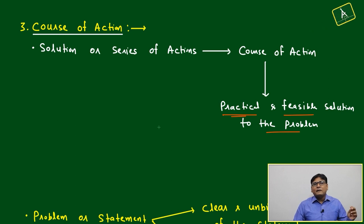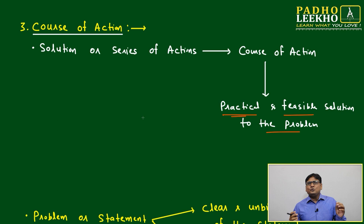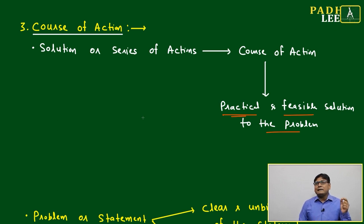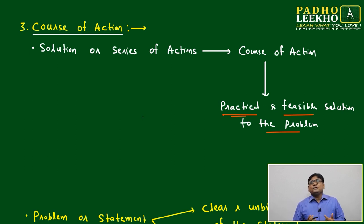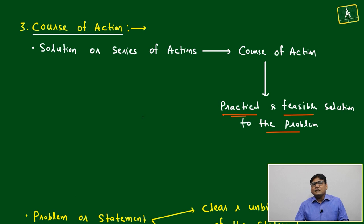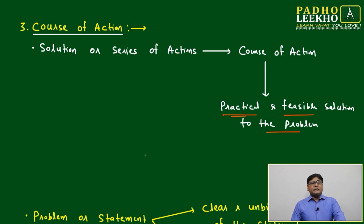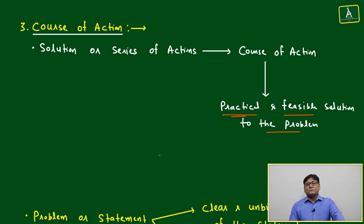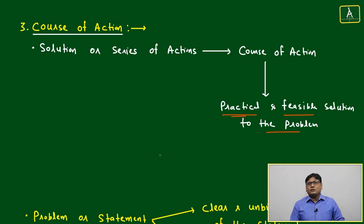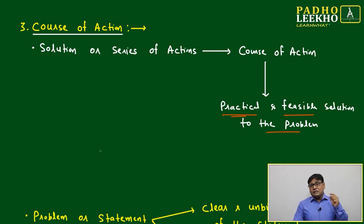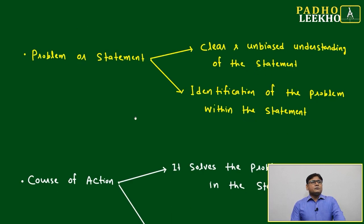Many times, whatever course of action is given may be very practical and very feasible, but it is not tackling the problem highlighted in the proposal. Then that course of action cannot be suitable for that point of time or for that proposal, and we cannot accept it. It must be practical, feasible, and handle that particular problem. It should not be beating around the bush. It should be directly related to that central problem or statement.